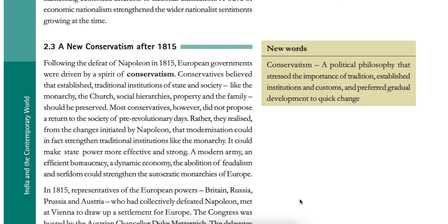Following the defeat of Napoleon in 1815, European governments were driven by a spirit of conservatism. Conservatives believed that established traditional institutions of state and society — like the monarchy, the church, social hierarchies, property and the family — should be preserved. Most conservatives, however, did not propose a return to the society of pre-revolutionary times. Rather, they realized that modernization could in fact strengthen traditional institutions like the monarchy — a modern army, an efficient bureaucracy, a dynamic economy, and the abolition of feudalism and serfdom could strengthen the autocratic monarchies of Europe. New word: conservatism — a political philosophy that stressed the importance of traditional established institutions and customs and preferred gradual development to quick change.